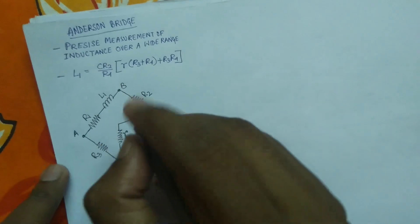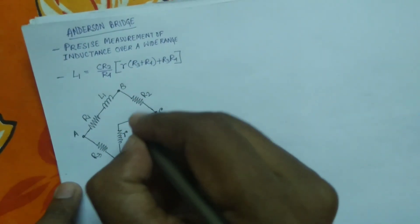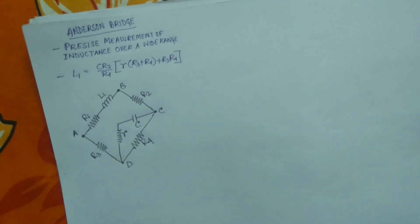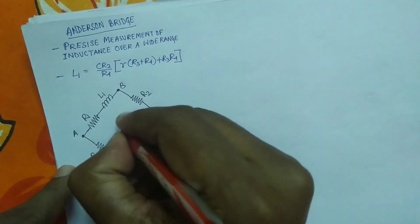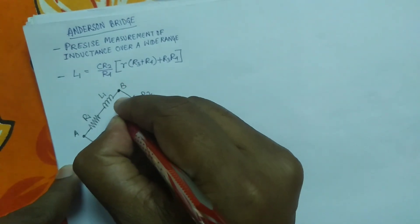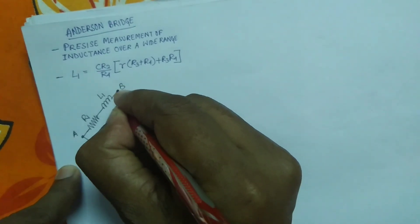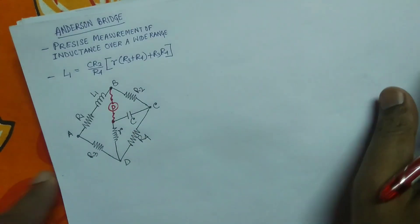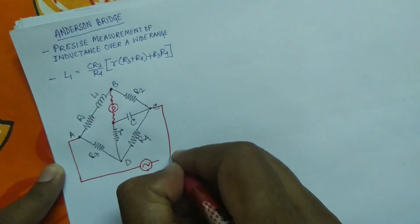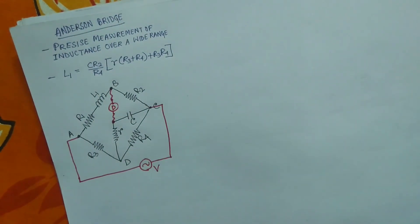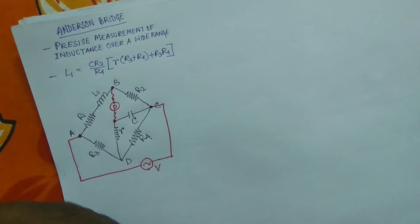Across points C and D, a small resistance r and a capacitor C have been placed. As this is an AC bridge, a detector D is placed across two points, and through points A and C we are giving the supply voltage V.